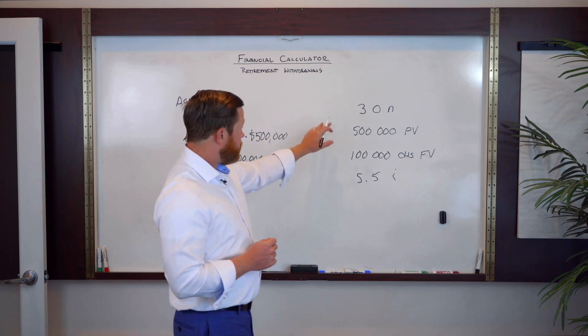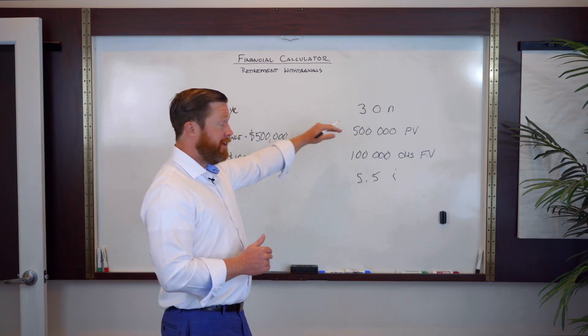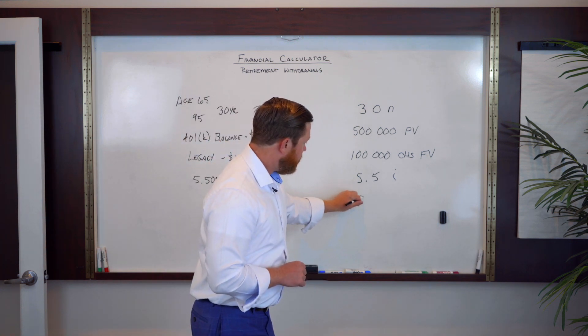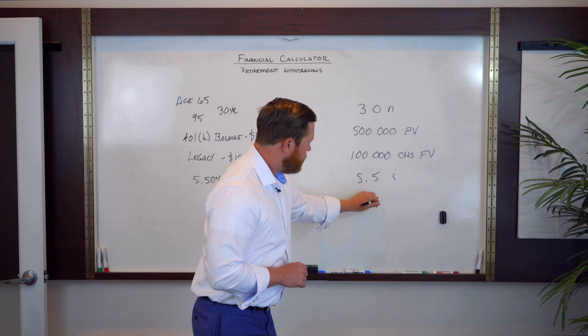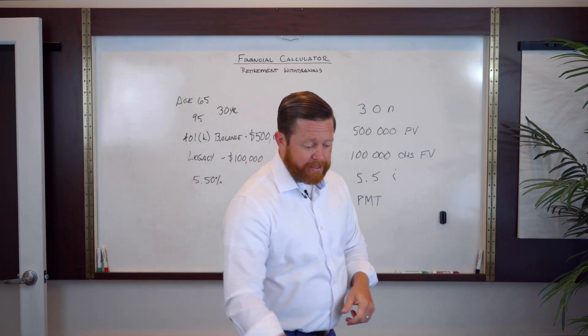So after we do that, we're solving for the payment, how much we're going to pay out of our $500,000 401k IRA. So we'll hit PMT and see exactly what that looks like. So let me grab the calculator here and go ahead and input this information.